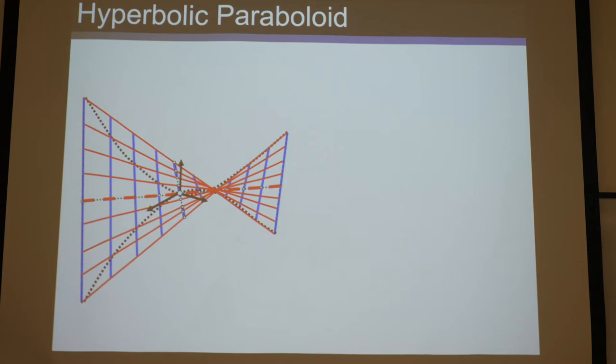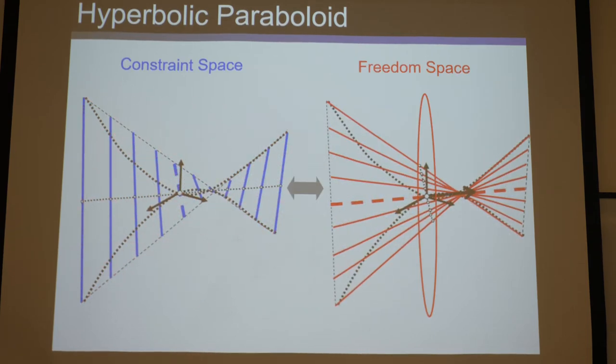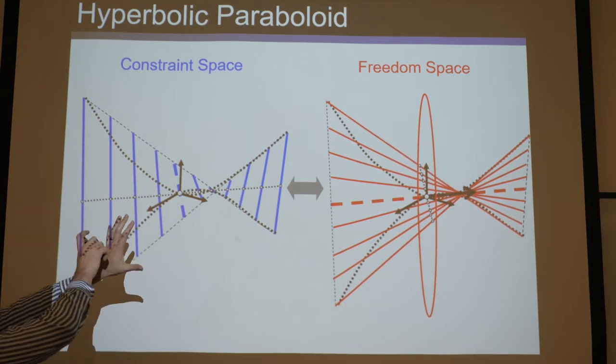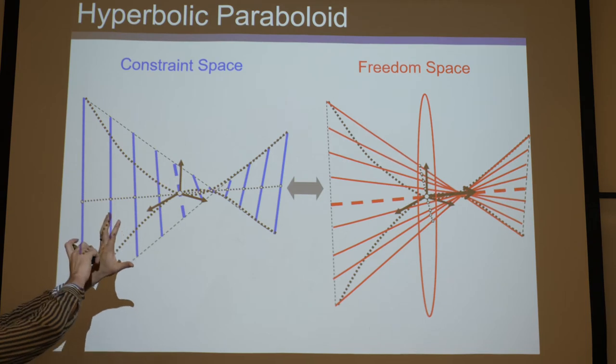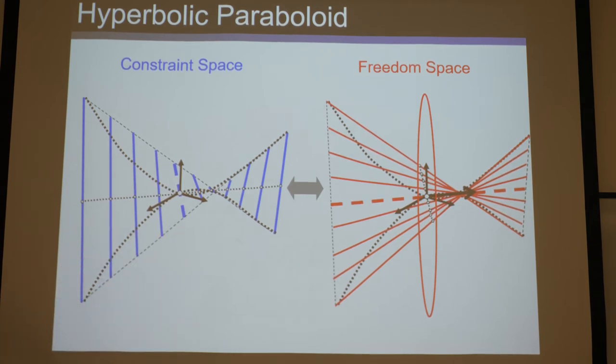So anytime you have a double-ruled surface, it's going to be a freedom and constraint space, a complementary freedom and constraint space. Now, I showed them on top of each other as all freedom and constraint spaces should be, but here I've separated them just for visual clarity.